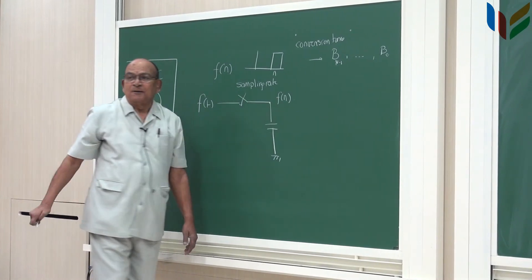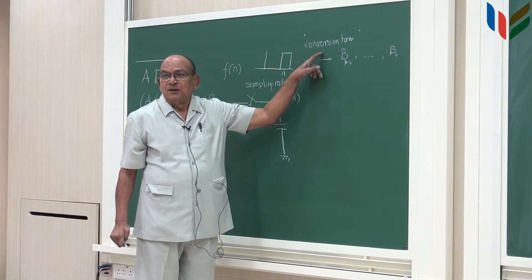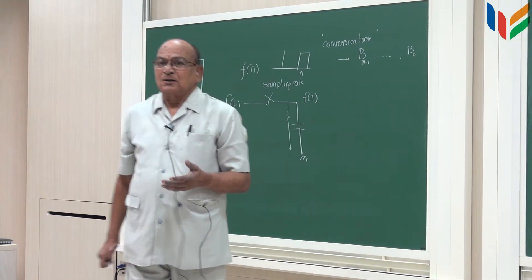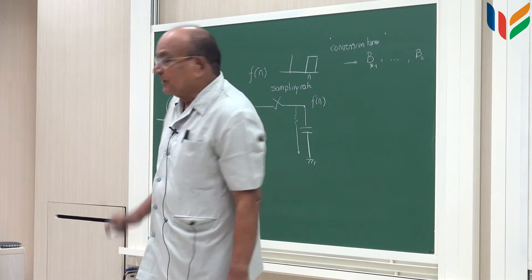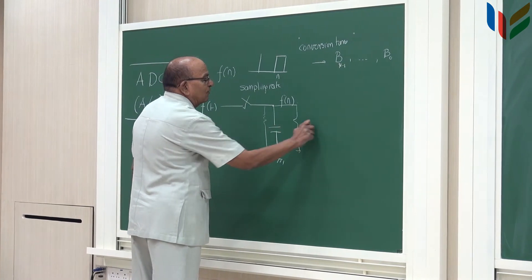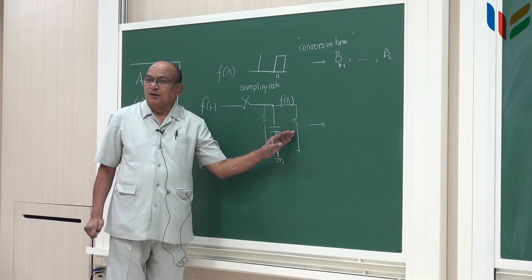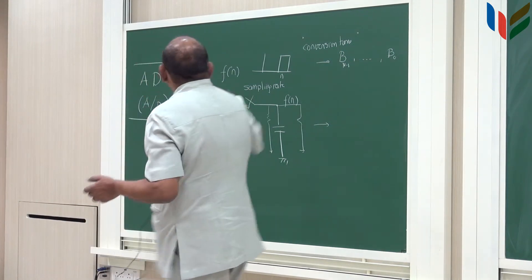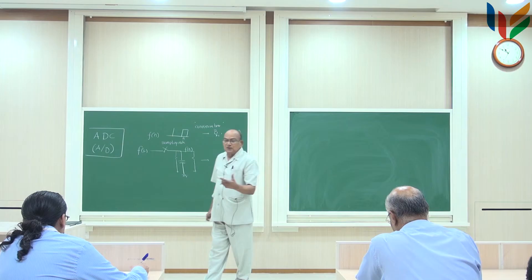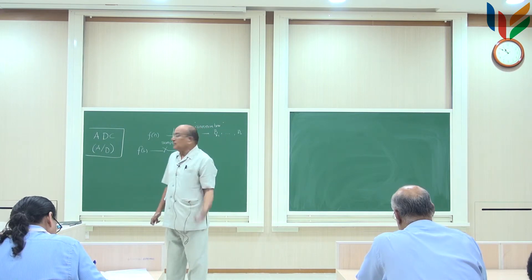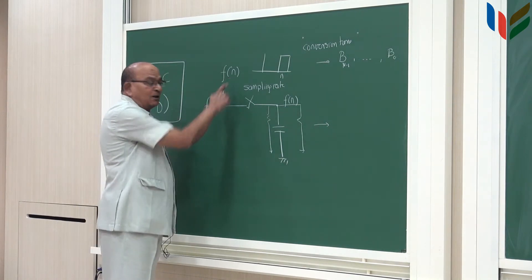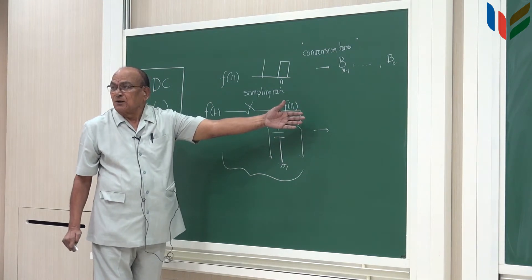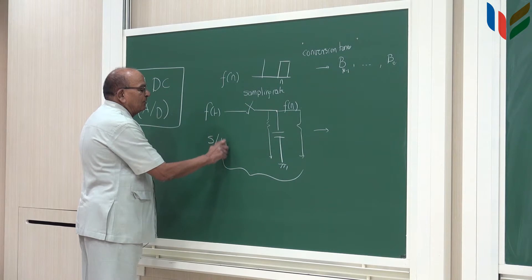This voltage is now charged to F of n. This F of n must remain for the conversion time. This capacitor has some amount of loss because the dielectric will have some loss. As a result of that, there is a self-discharge of the capacitor. But that is not the main problem. The main problem comes from the input impedance of whatever the following circuit we have here. This and this in parallel will constitute the time constant for the discharge of this capacitor. And this time constant should be comparatively large than this conversion time, so that the decay in this is negligible during the conversion time. These are the kinds of requirements that we have in the circuit for the conversion of analog signal into a sample signal. This circuit is a very simple circuit. As you can see, a FET switch here and a capacitor here and then it goes to the A to D converter.